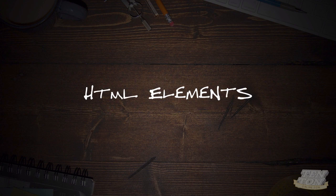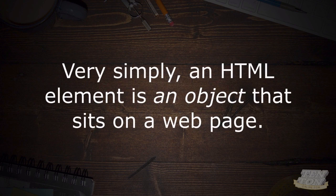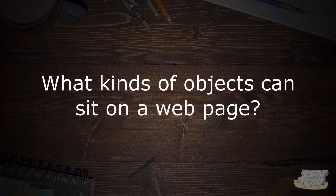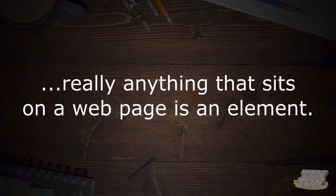Let's start with HTML elements. What is an HTML element and what are they used for? Very simply, an HTML element is an object that sits on a web page. Things like paragraphs, images, headings and subheadings, navigation menus, bulleted lists, numbered lists, a footer — really anything that sits on a web page is an HTML element.